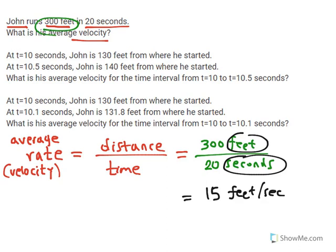Does that mean he's always going 15 feet per second? No. Maybe when he starts he needs to pick up speed, so he's going a little bit slower. It's possible he's going faster than 15 feet per second for a portion of the 20 seconds, and slower for another portion. But on average, for those 20 seconds, he's going 15 feet per second. That's how we understand average velocity — it's calculated over a particular time interval, in this case 20 seconds.